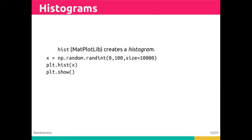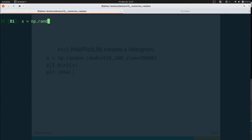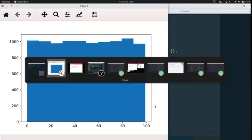Hist inside of pyplot, inside of matplotlib, is useful for creating a histogram. In this case we're generating 10,000 random integers between 0 and 100 exclusive. We're going to plot that and we're going to show that. x equals np.random.randint 0 to 100 size of 10,000 plt.hist x.